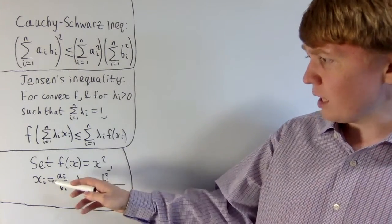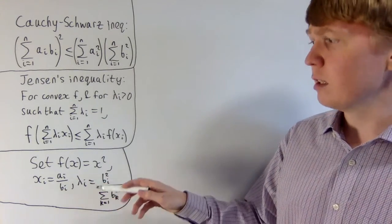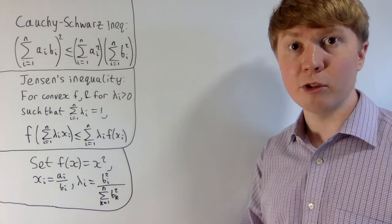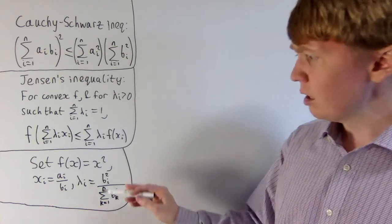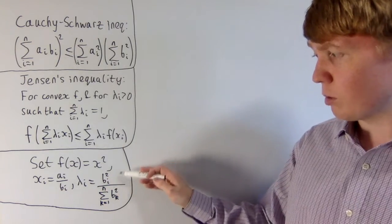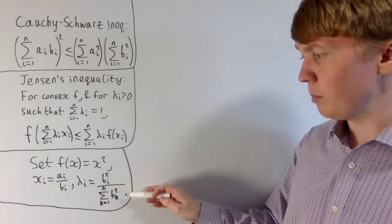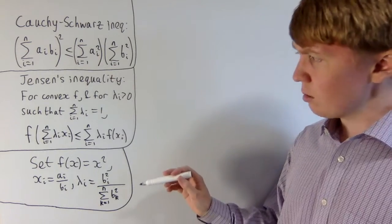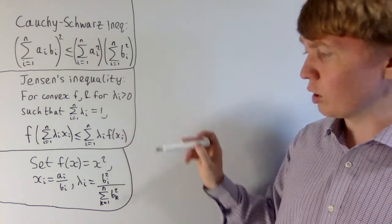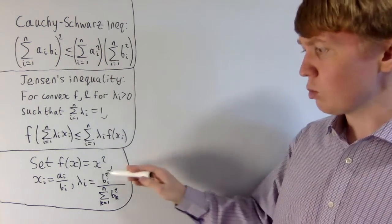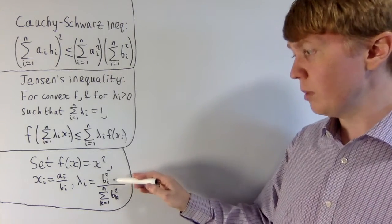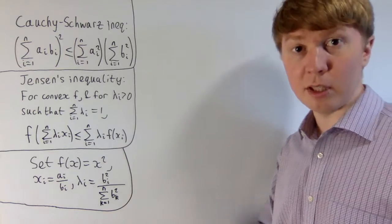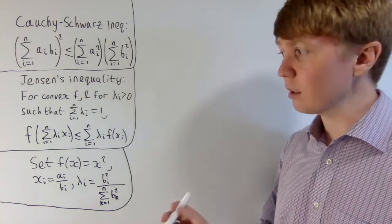We choose our xᵢ's to be equal to aᵢ/bᵢ, assuming for now that none of the b terms are zero — we'll deal with that as a special case at the end. We choose our λᵢ's to be bᵢ² divided by the sum of all bᵢ² terms (over index k). The sum of all λᵢ's equals 1, because adding them gives the sum of bᵢ² divided by the sum of bₖ², which is the same sum with a different index.